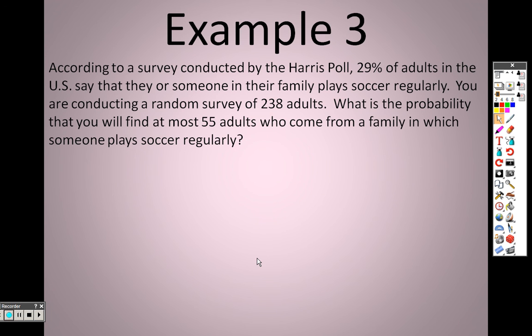So, when we're looking at this example, it says, according to a survey conducted by the Harris Poll, 29% of adults in the U.S. say that they or someone in their family plays soccer regularly. You are conducting a random survey of 238 adults. What's the probability that you will find, at most, 55 adults who come from a family in which someone plays soccer? First, we need to find N.